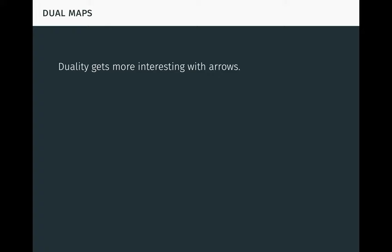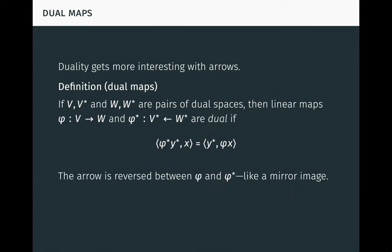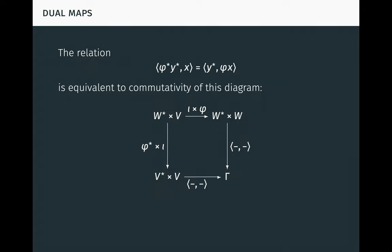Duality gets more interesting with arrows, that is, linear maps. If V, V-star and W, W-star are pairs of dual spaces, then linear maps phi from V to W and phi-star to V-star from W-star are dual if they satisfy this relation: phi-star y-star times x equals y-star times phi x, for all y-star in W-star and x in V. Notice the arrow is reversed between phi and phi-star, like a mirror image. Also, like the definition of dual space, this definition is fundamentally symmetric between phi and phi-star. The relation in the definition is equivalent to commutativity of this diagram, which helps to visualize the situation and also to see how one might arrive at the relation by thinking about the possible interactions of linear maps and scalar products.